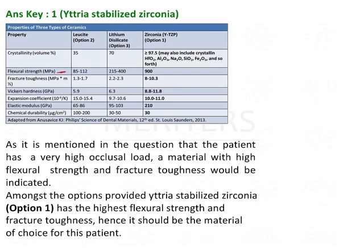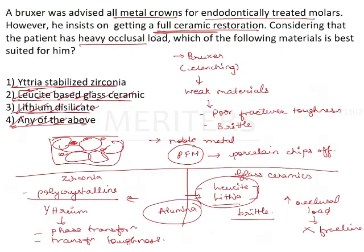This table highlights the mechanical properties of the three materials. Looking at flexural strength: highest for zirconia at 900 MPa. Fracture toughness is again highest for zirconia — almost three to four times greater than the others. Hardness of zirconia is greater than the other two materials. Modulus of elasticity is also highest for zirconia; it can withstand more stresses without permanent deformation. The desirable properties of yttria-stabilized zirconia make it most acceptable for a bruxer who wants full ceramic restorations.